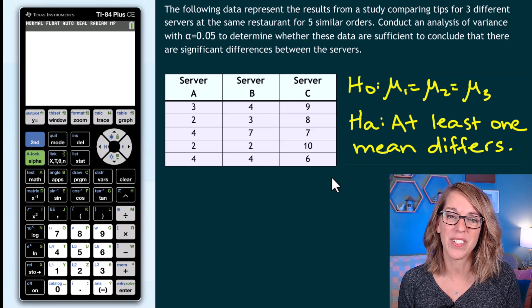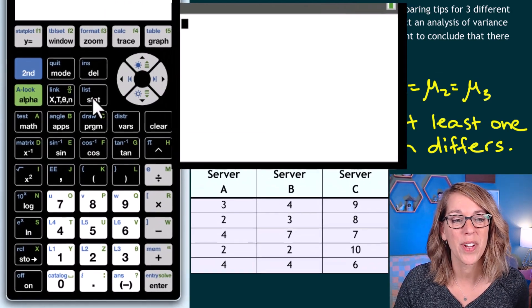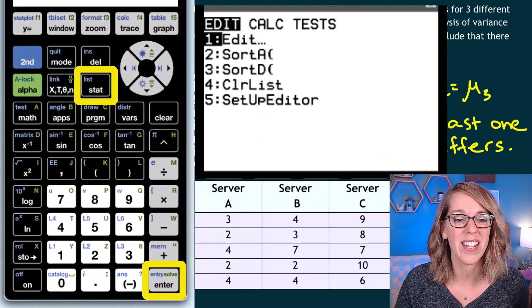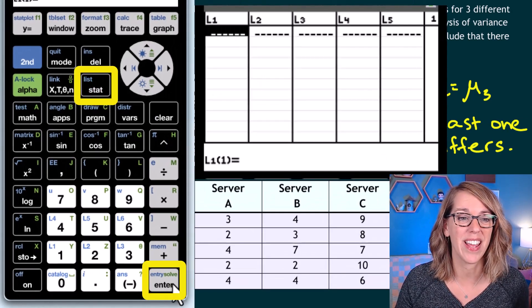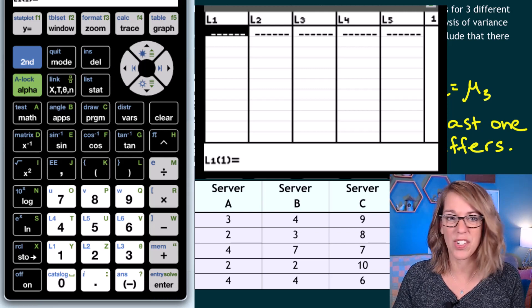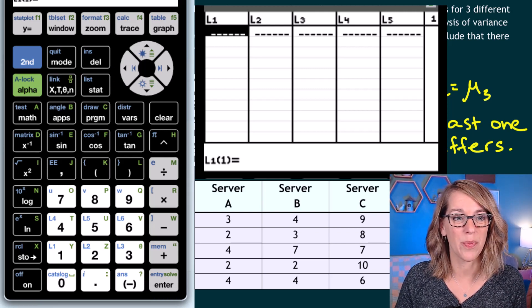The very first thing that we want to do is to get this data into the calculator. We're going to go to our stat menu and then enter for edit. We hit enter and now I want to put in each of the server's tips. Server A is going to go into list one.